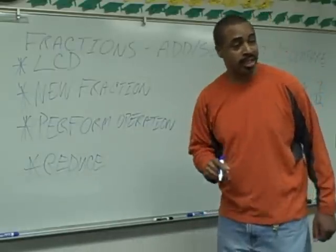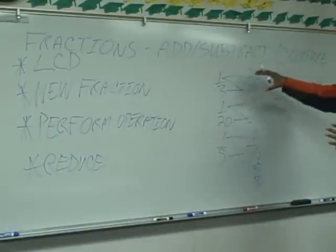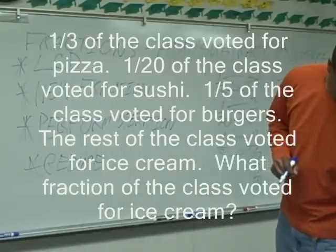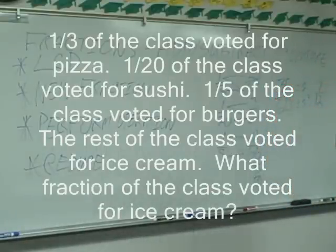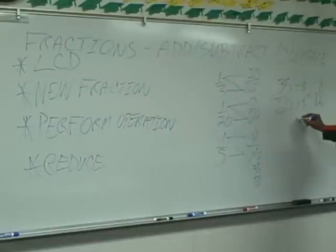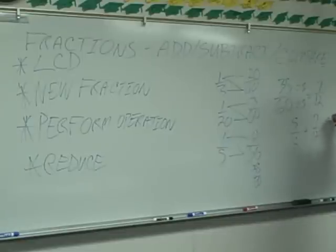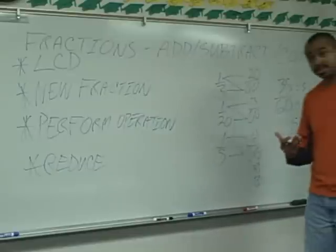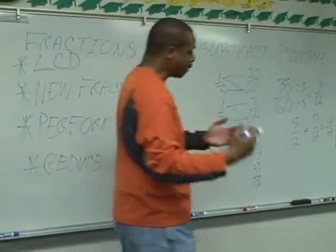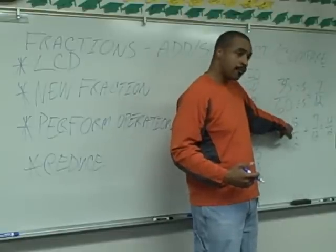So seven-twelfths of the class — but we're not done yet. Because now all we know is the people who wanted pizza, sushi, and burgers. But the question asks us how many voted for ice cream — the rest. If seven-twelfths voted for the other things, what fraction voted for ice cream? Five-twelfths. Because five-twelfths plus seven-twelfths is twelve-twelfths, or one — the whole class. So one minus seven-twelfths equals five-twelfths voted for ice cream. Make sense?